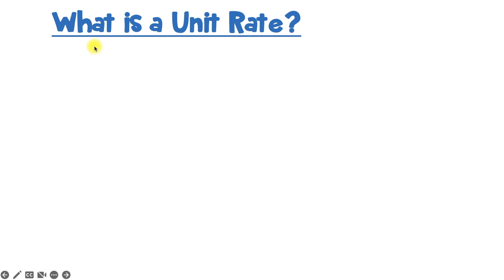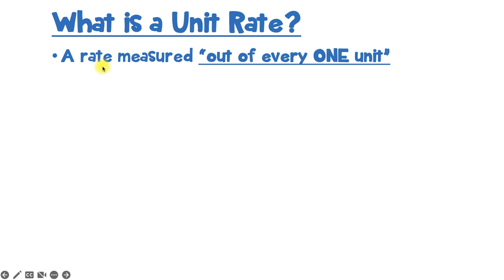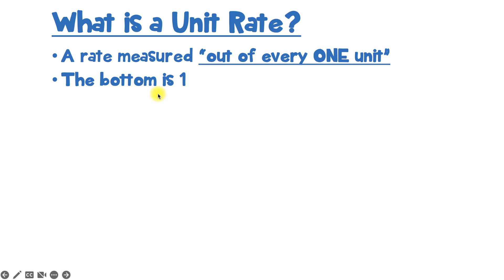So, first of all, what exactly is a unit rate? Well, a unit rate is a special kind of rate that's measuring out of every one unit. And since it's out of every one unit, that means this rate is going to have a one in the bottom. Rates have a top and a bottom, and a unit rate's bottom is always one.